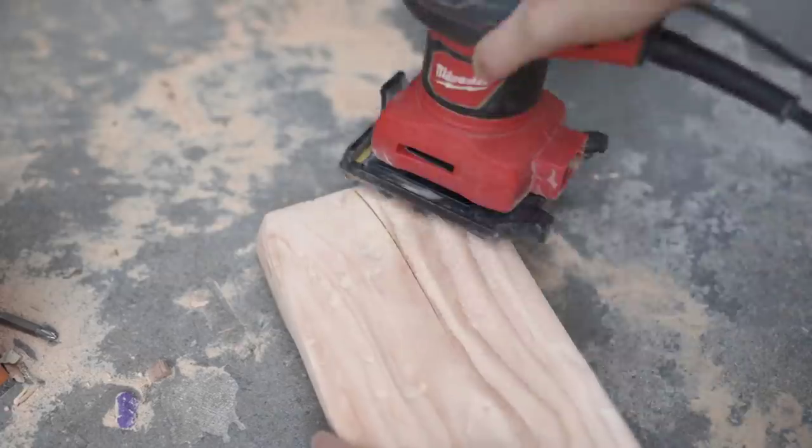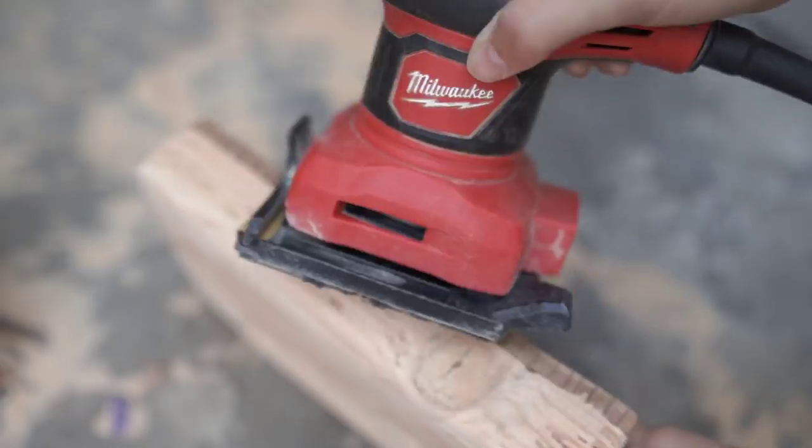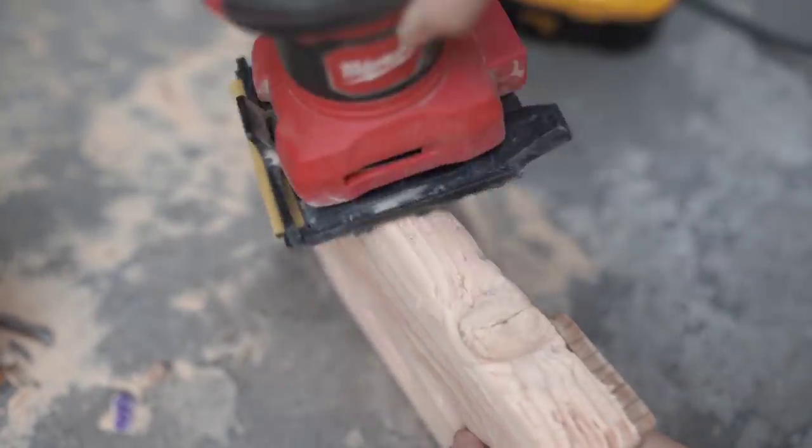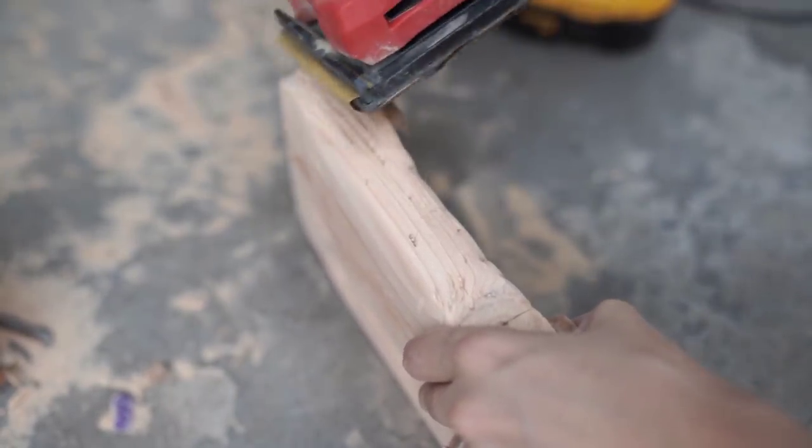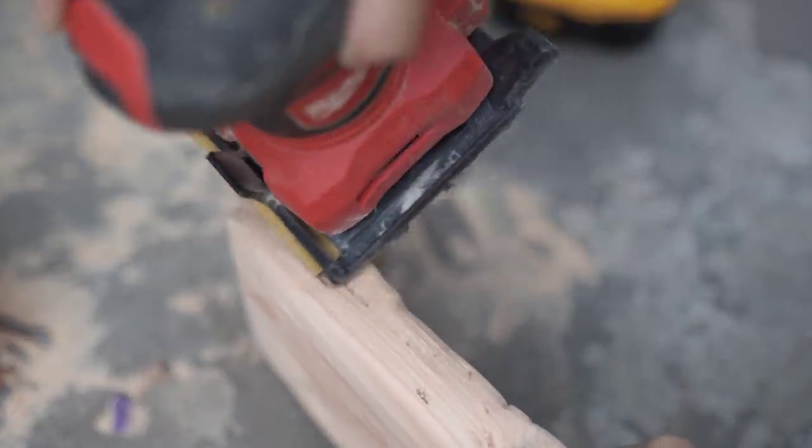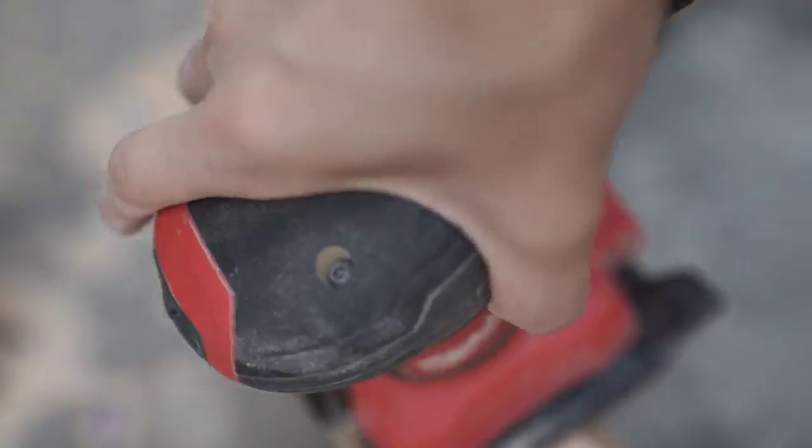Then I went in with a 120 grit sandpaper to just kind of finish everything off and make it really smooth. Make sure that nothing is splintering or hanging off. And that really finishes it up.